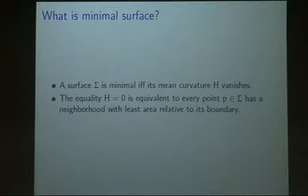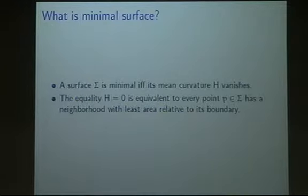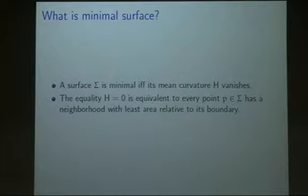I want to explain what a minimal surface is. A surface Σ is minimal if and only if its mean curvature H vanishes identically. The physical meaning is that at every point P in the surface, the minimal surface Σ has a small neighborhood which is the least area relative to its boundary. This means every minimal surface, at every point, can be realized by a soap film.